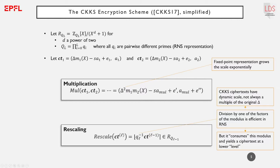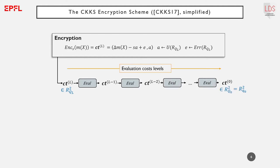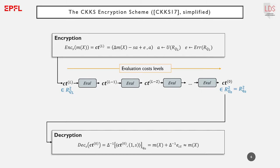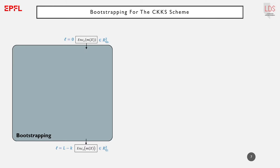CKKS ciphertexts have a dynamic scale that is not necessarily a multiple of the original scale, which brings additional challenges when designing homomorphic circuits. The evaluation of a homomorphic circuit costs levels, and eventually an evaluator will end up with a ciphertext at level 0 for which no more rescalings are possible. Although decryption is still possible at level 0, the question is whether it is possible to get back to a higher level to continue the evaluation without knowing the secret key. This is the purpose of the bootstrapping procedure.